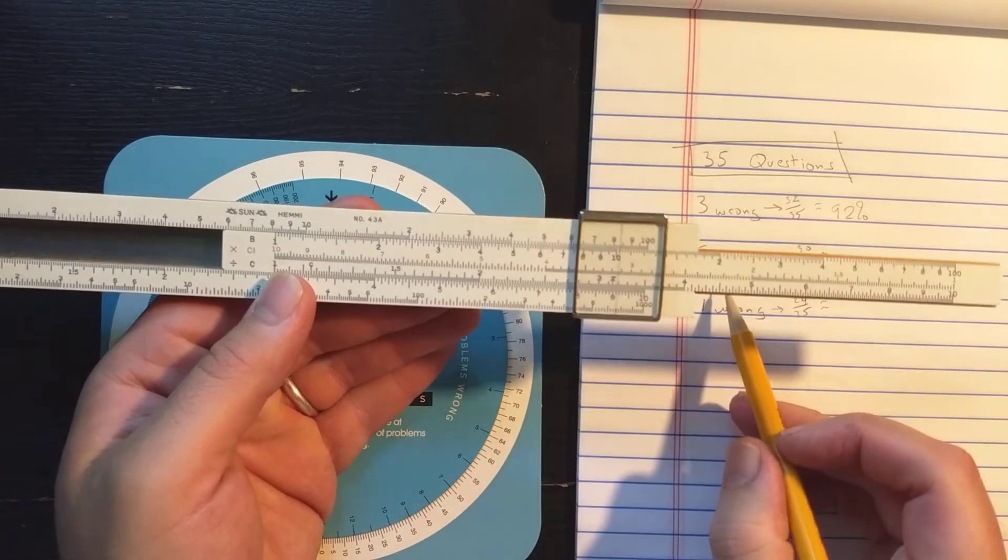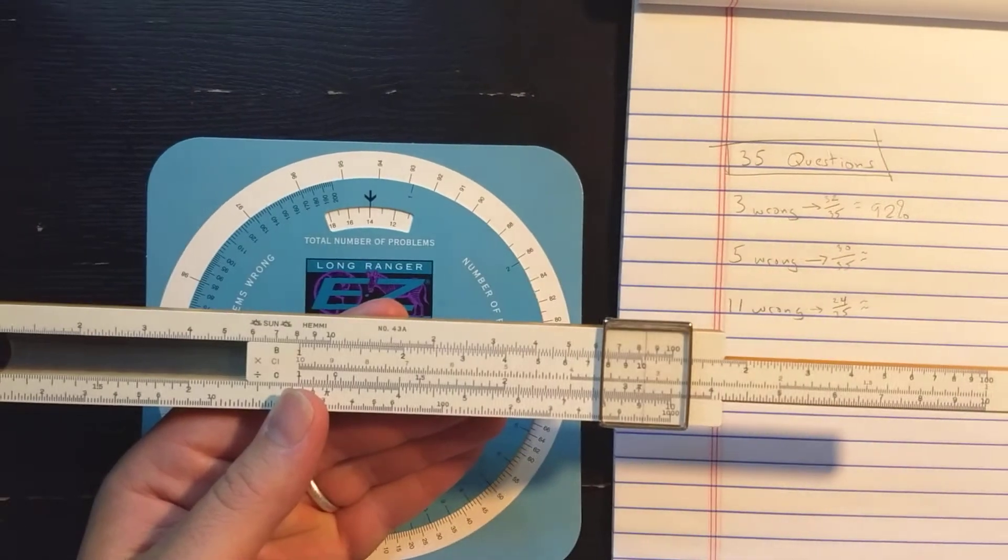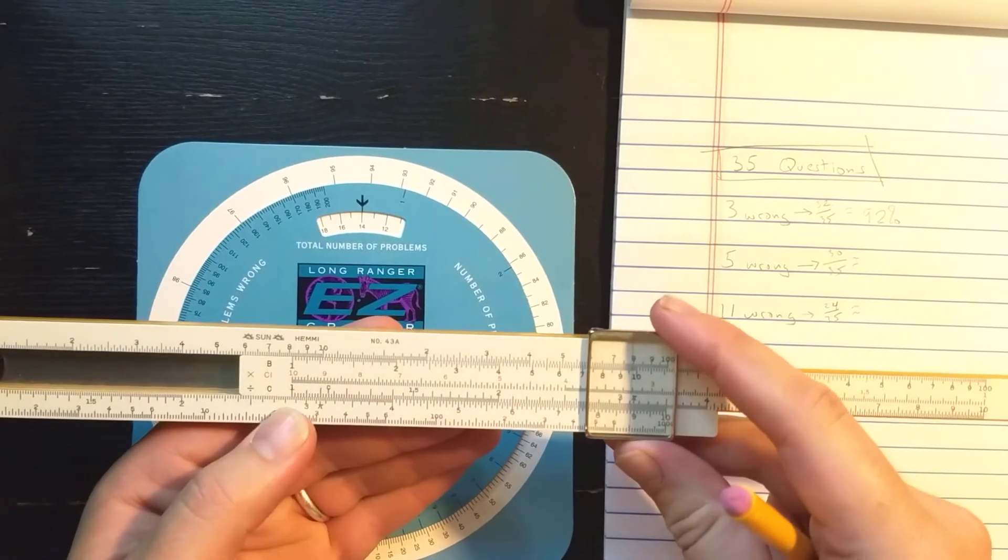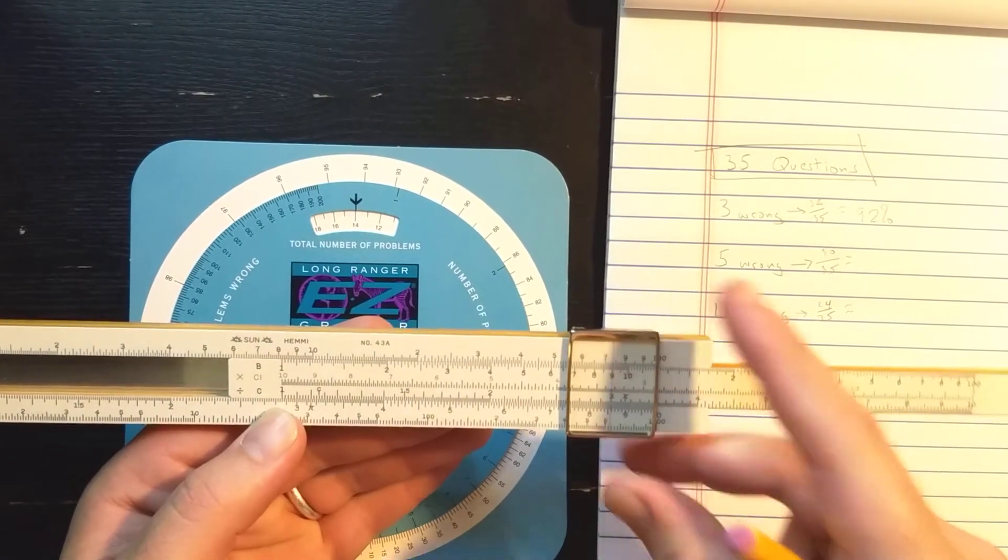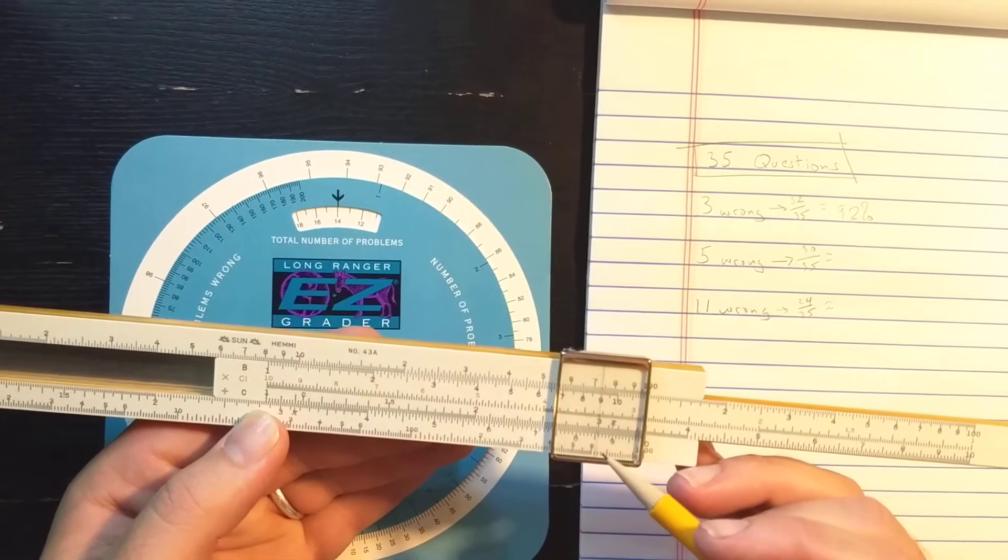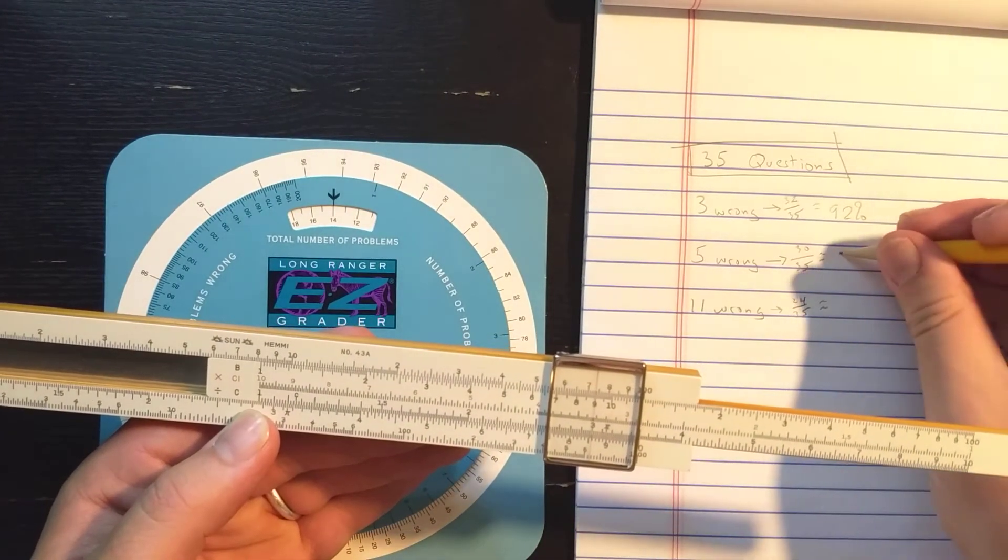For the student with 5 wrong, I need to find the 30 on the C scale. His grade looks to be between 85 and 86, so he'll get an 86.